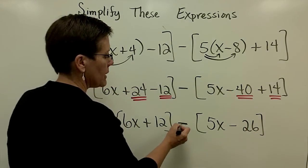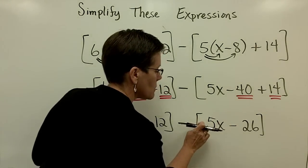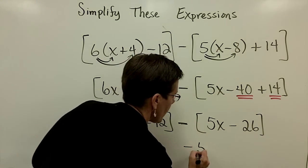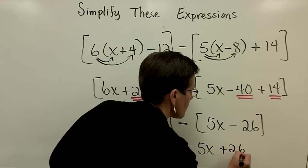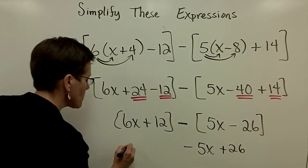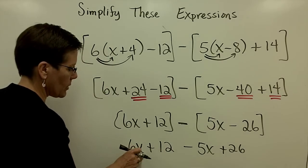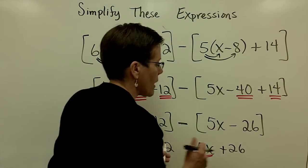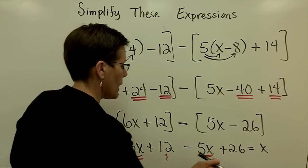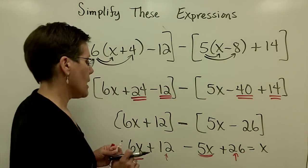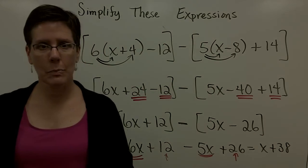Finally, this minus sign right here is asking you to take the opposite of those. This is positive right now, so that will be a minus 5x. This is negative. It will become a positive 26. I'm going to drop this set of brackets now. And finally, I'm ready to combine my like terms. 6x minus 5x is 1x, and 12 and 26 adds to be 38. I'm done. I've simplified this expression.